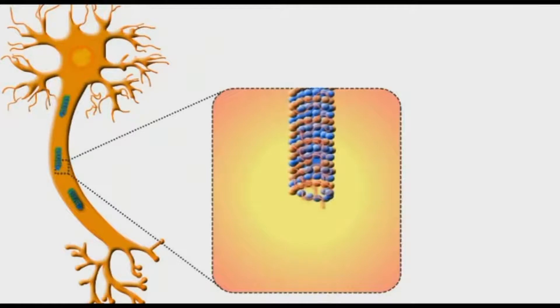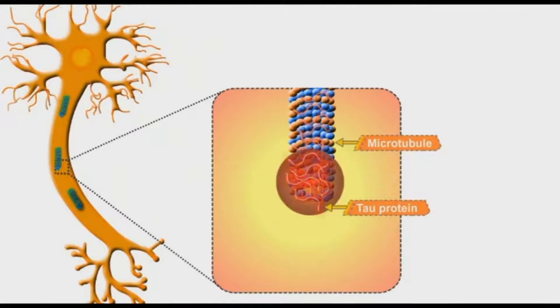Let's start with neurofibrillary tangles. As part of the cytoskeleton, microtubules play an important role in the formation of cell shape and transportation of important nutrients within the nerve cells. In healthy neurons, there is a natural protein called tau protein which maintains the integrity of cellular microtubules.